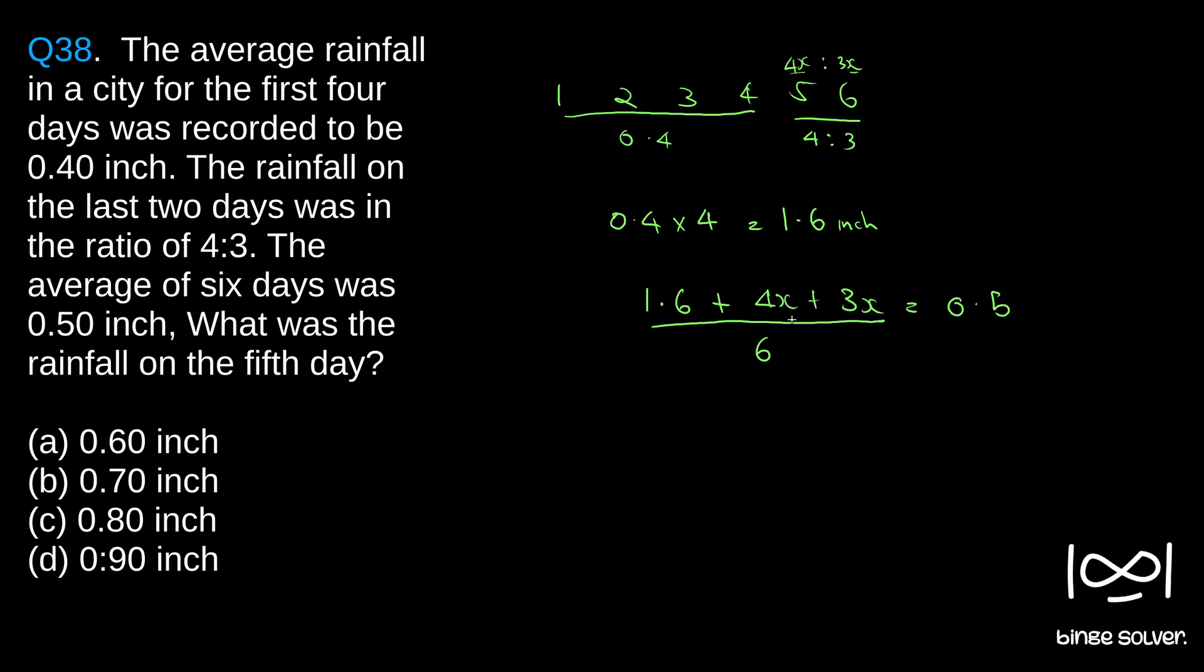From this, 7x is equal to 6 into 0.5 which is 3 minus 1.6. If you simplify this equation we get 7x, 4 plus 3, equals 6 into 0.5 minus 1.6, that is 3 minus 1.6.